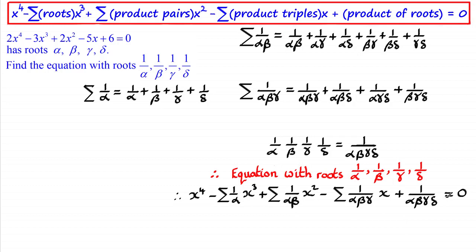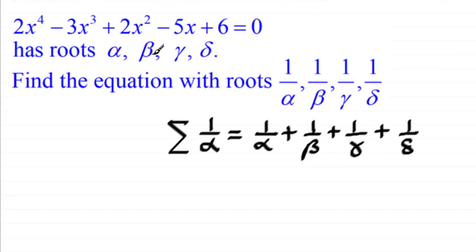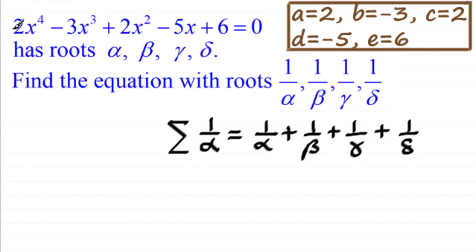I'm going to need to get values for each of these coefficients — x cubed, x squared, x, and the constant at the end. In the previous video we discussed the relationship between the roots alpha, beta, gamma and delta and any quartic of the form ax⁴ + bx³ + cx² + dx + e = 0. Looking at our equation, we can see that a = 2, b = −3, c = 2, d = −5, and e = 6.